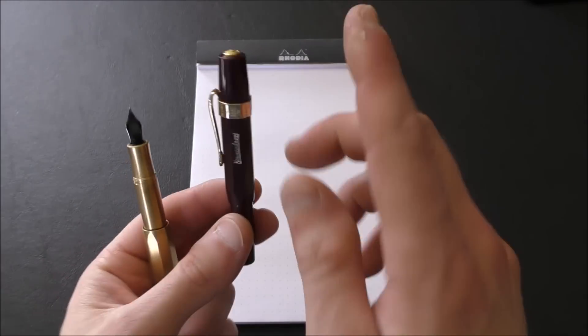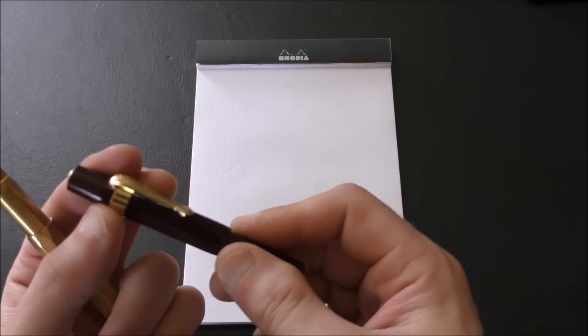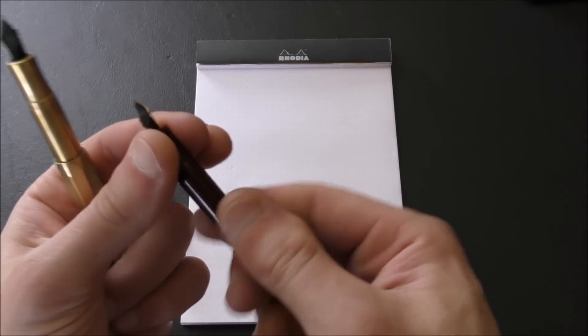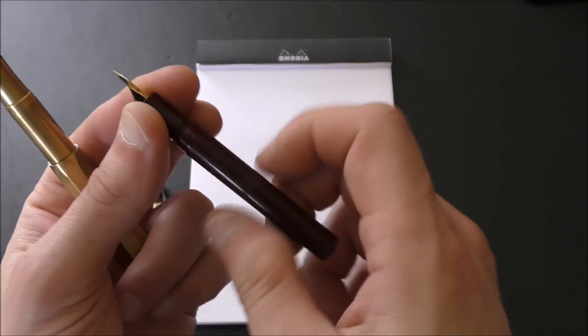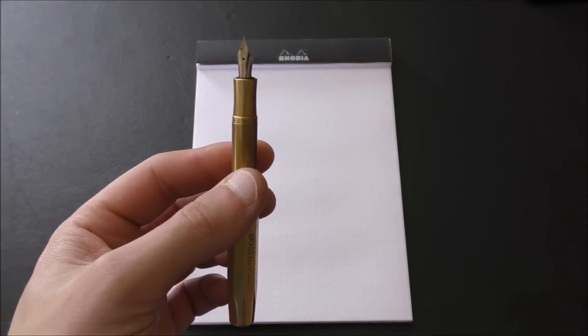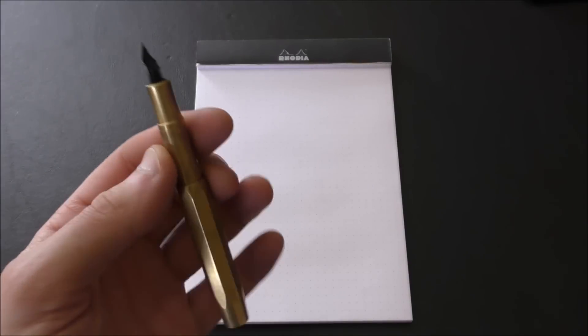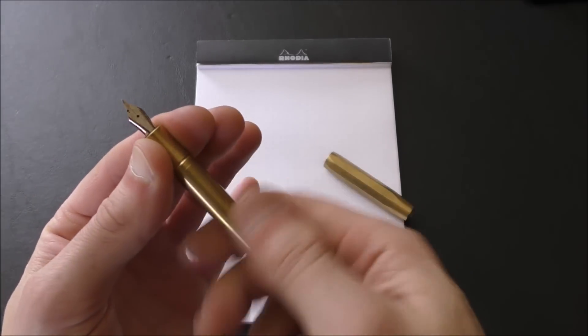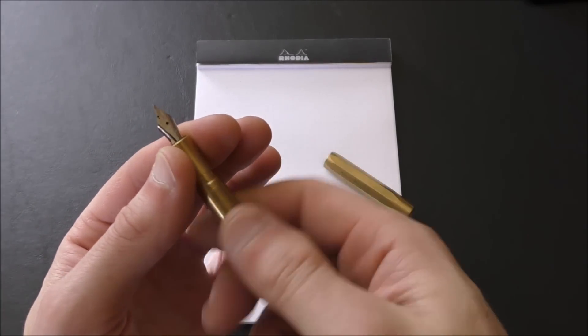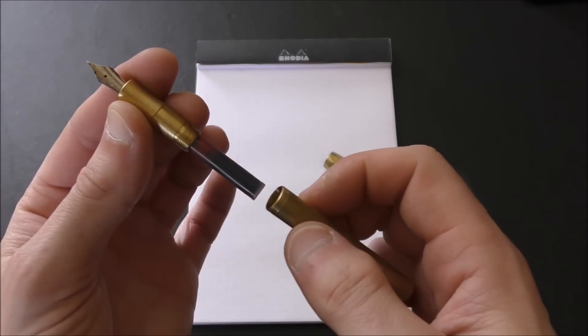One big difference, though, is since this is made of plastic, you can convert this into an eyedropper pen. You can just put a little bit of silicone grease on these threads here and convert it to an eyedropper. This is made of metal, so you cannot do that, obviously. So you're confined to using the cartridges or the little squeeze converter that Kaweco has. I use cartridges for the most part, or at least I have been so far. Right now, I think I have a Diamine ancient copper in there. I believe so.